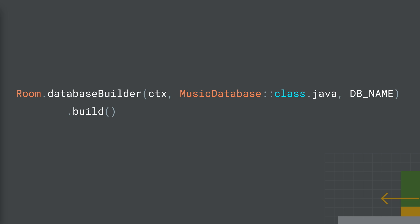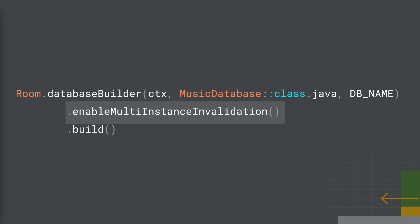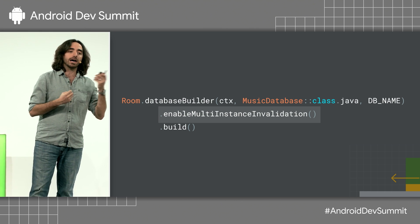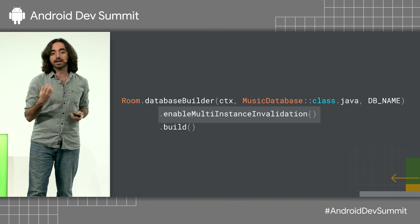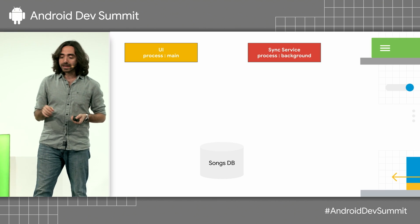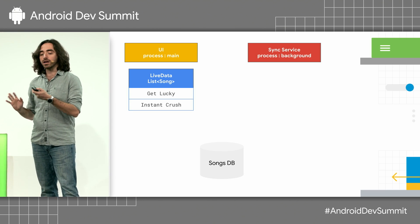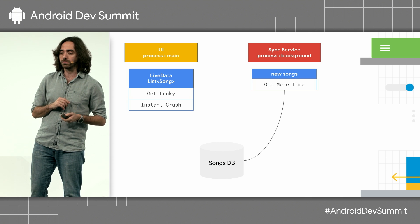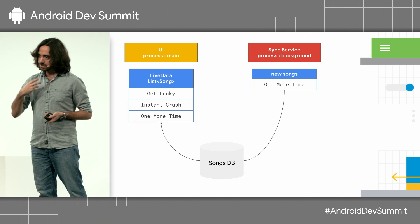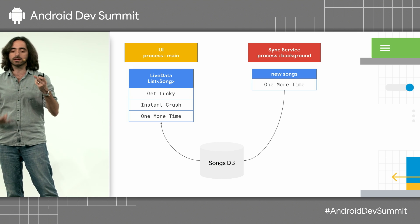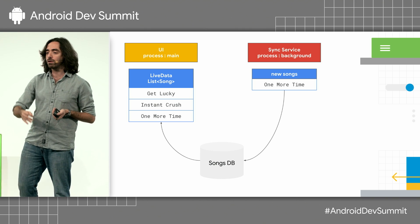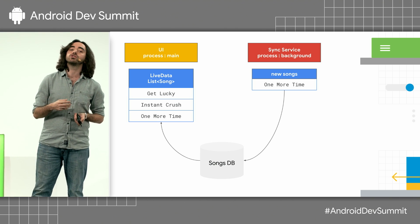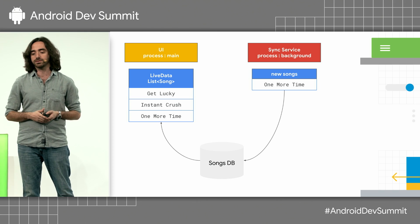With Room 2.1, you can enable multi-instance invalidation when you build the Room instance. This will look for other instances of Room accessing the same database. Once you do that, your background process service can update the database and all instances of Room will update automatically. This is off by default because we need to create a service and there's some IPC involved — it's not a big cost, but it's a cost most people don't need, so you have to enable this flag to take advantage of this feature.